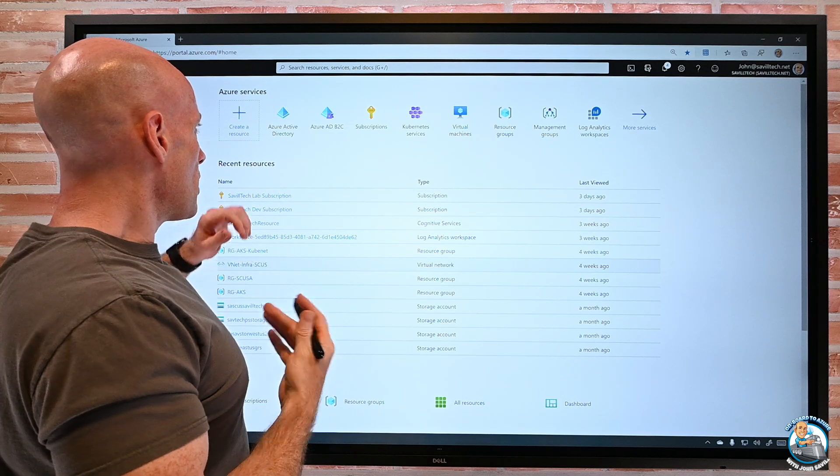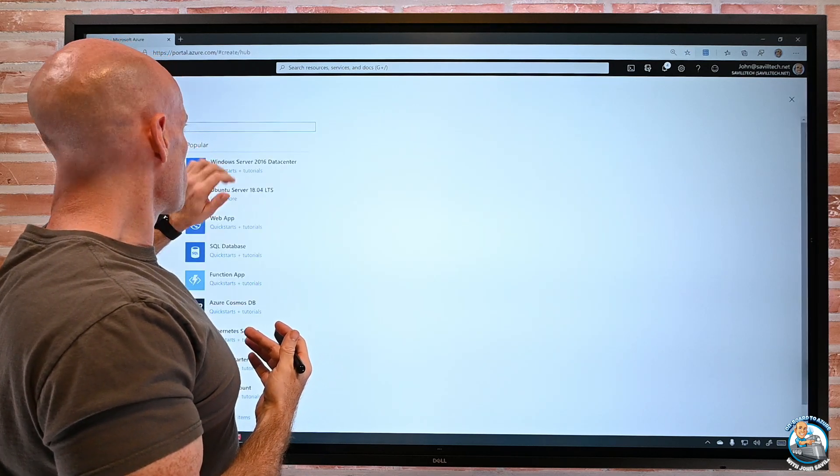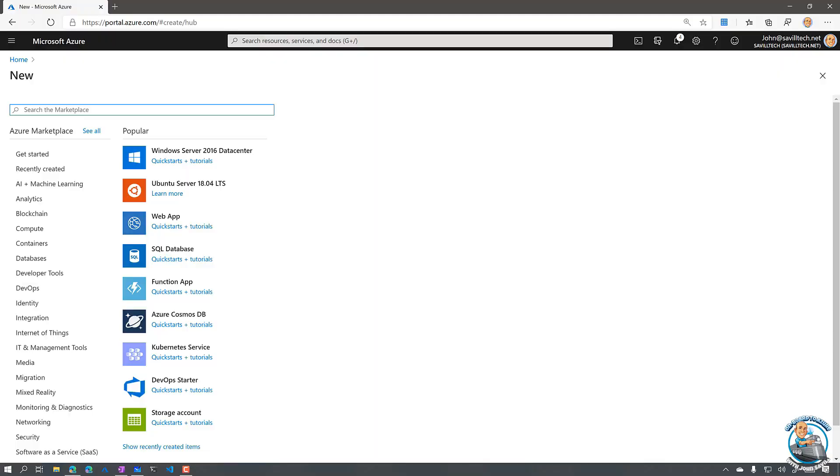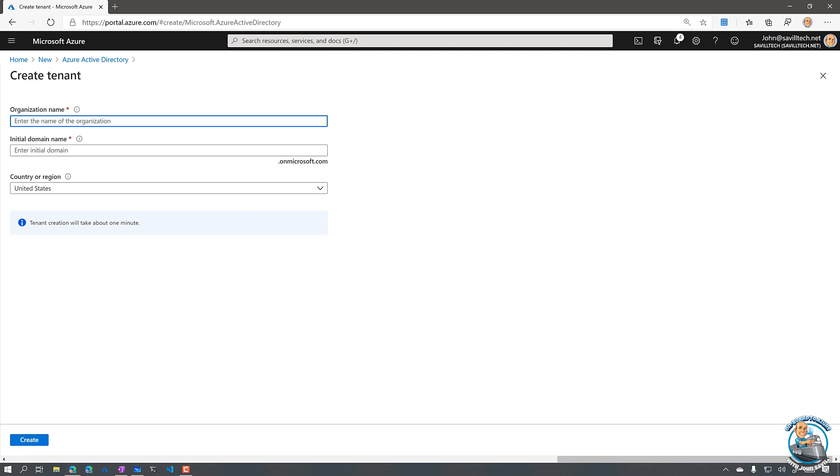And to kind of prove that, if I go in and I actually look at, hey, Azure, I want to create a resource. And if I just type here active directory, I can create a new Azure AD. And notice, all it asks for is a name, an initial domain name, which will be that something.onmicrosoft.com, and a region. There's no, hey, what subscription do you want to create this in? What resource group you want to create this in? None of that stuff actually applies because they don't live within a subscription.